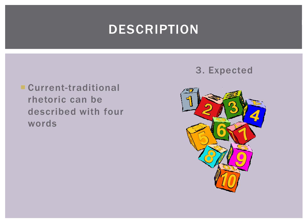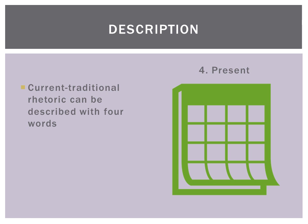Current traditional theory provides a product that readers know what they're looking for — they can find the main idea, find the support, and understand the objective. For that reason, CTR is present in classrooms — still present in freshman composition, high school composition — and students know that if they can write this paper, they can pass another class requiring writing.